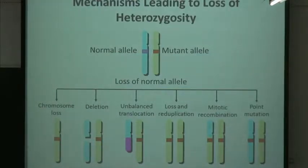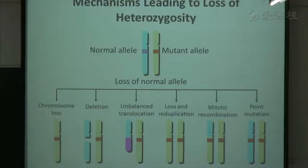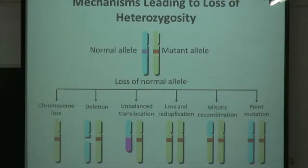Here is the mechanism leading to loss of heterozygosity. When one allele of the tumor suppressor gene is mutated, the cell is in a heterozygous situation. During cell division, the normal allele can be lost — this process is called loss of heterozygosity. This can be achieved by chromosome loss (the entire normal chromosome is lost), gene deletion, chromosome translocation, duplication (where the mutant allele is duplicated to replace both alleles), mitotic recombination, or point mutation.